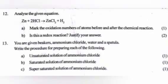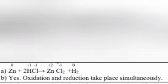Question 12: Analyze the given equation Zn plus 2HCl gives ZnCl2 plus H2. A. Mark the oxidation number of atoms before and after the chemical reaction. B. Is this a redox reaction? Justify your answer. Answer: B. Yes. Oxidation and reduction take place simultaneously.